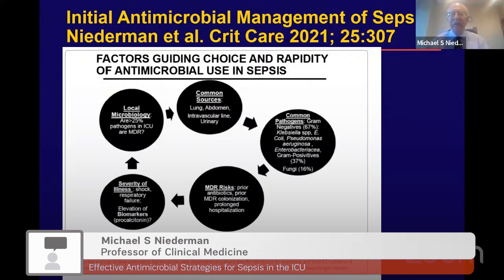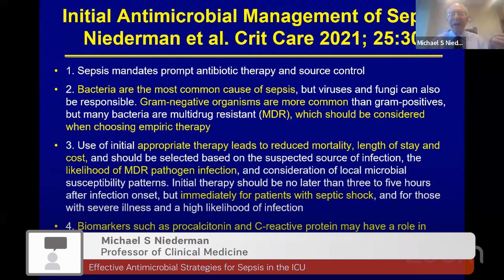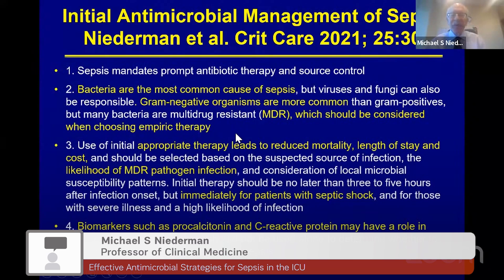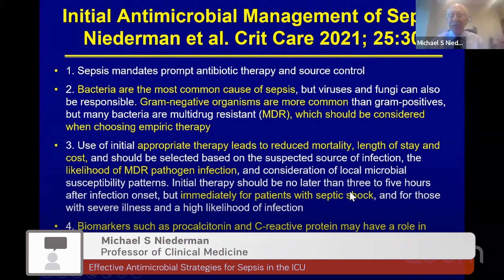Rather than specific guidelines, here are key principles for antibiotic management of sepsis. Sepsis mandates prompt antibiotic therapy and source control. Bacteria are the most common cause, though viruses and fungi can also be responsible. Gram-negatives are more common than gram-positives, and multidrug-resistant pathogens must be considered as they are associated with incorrect therapy, delays, and increased mortality. Use of initial appropriate therapy reduces mortality and length of stay. Therapy must be given as rapidly as possible for septic shock — no later than three to five hours in patients with severe sepsis regardless of shock status.